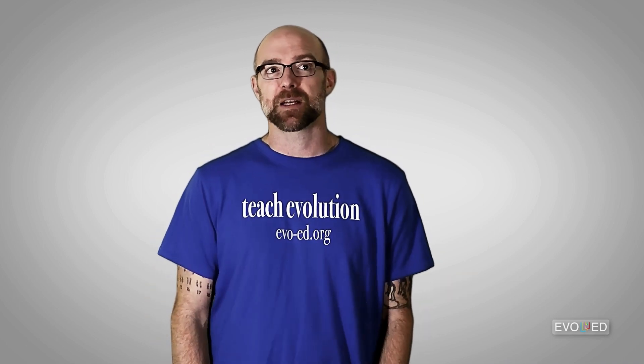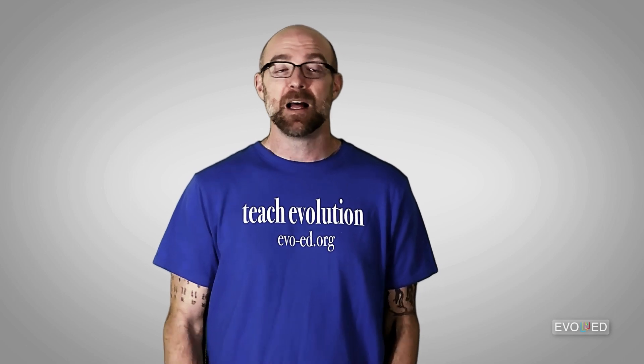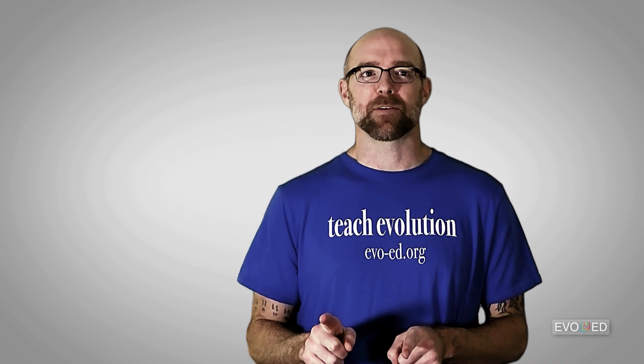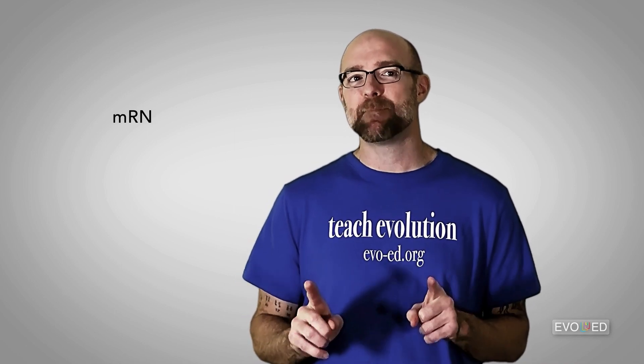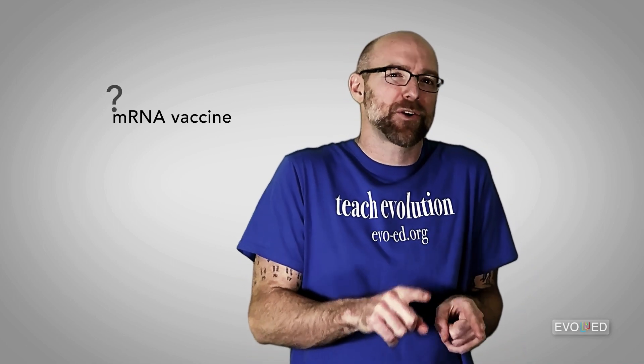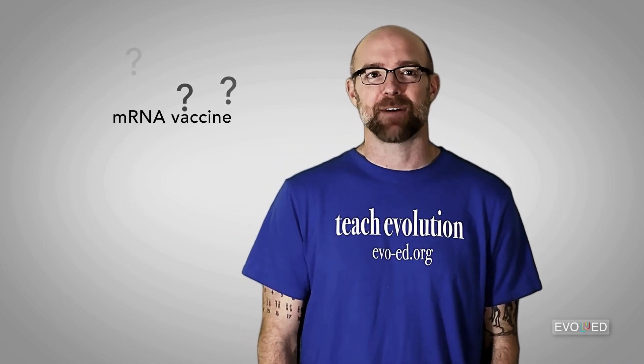A vaccine works by tricking your body into thinking that you have a viral infection. This then stimulates an immune response without actually causing the nasty complications of the disease itself. This vaccine-induced immune response makes your body more prepared to deal with subsequent viral infections. When it comes to the coronavirus, an innovative type of vaccine called an mRNA vaccine is used. So how does that trigger your immune system B cells to produce the antibodies necessary to neutralize the virus?